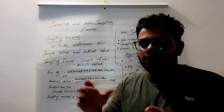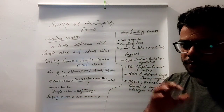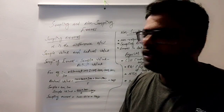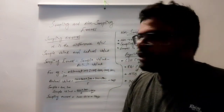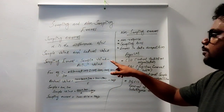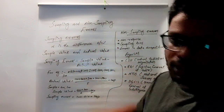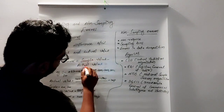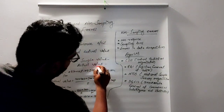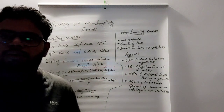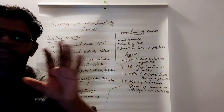So the formula is: Sampling Error equals Actual Value minus Sample Value. That is, actual value minus sample value.